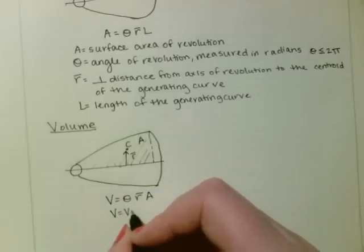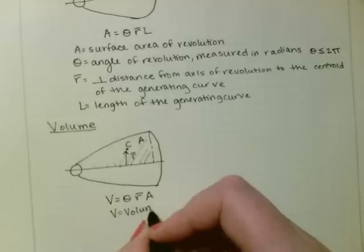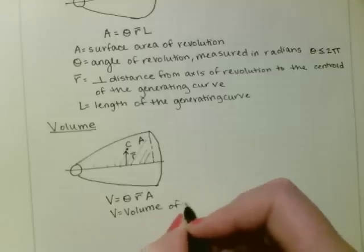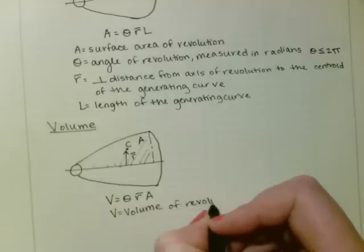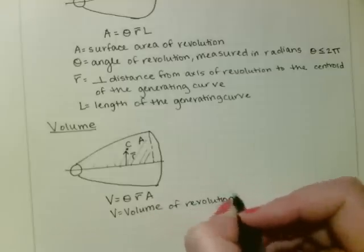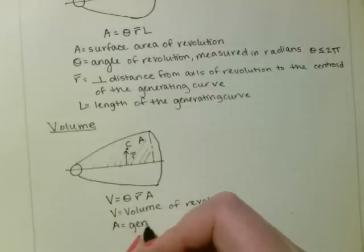So V is equal to the volume of the revolution, and A is equal to the generating area.